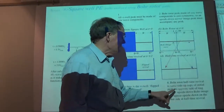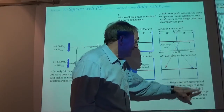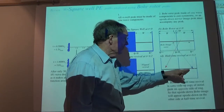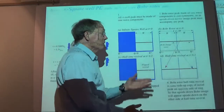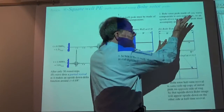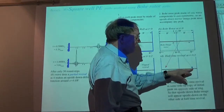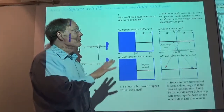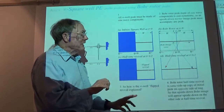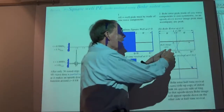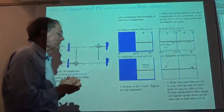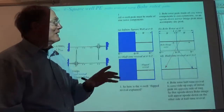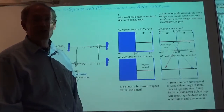The Bohr rotor half-time revival is the same-side-up copy of the initial peak on the opposite side of the ring. So the upside-down Bohr image will appear upside down on the other side. Each of these two things are behaving independently, like any linear combination of quantum states — they all do their thing independent of the others. When they cross you'll see some funny beats, but then they're off to the races after that. That's a little bit of the lore of peculiar dynamics possible in symmetric systems.